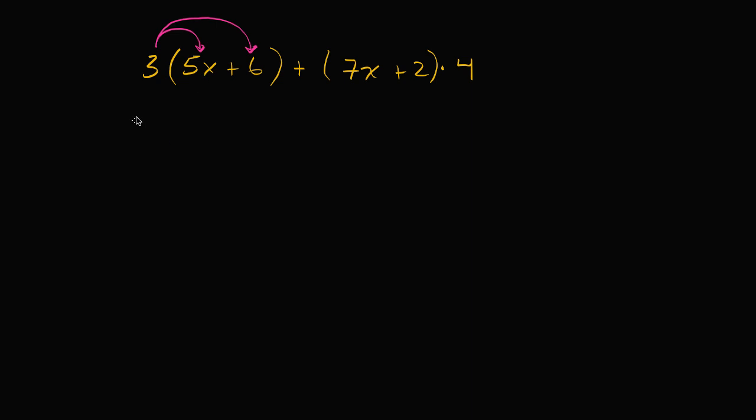So three times five x, well if I have five x's and I have three times that, I'm gonna have 15 x's. And then three times six is 18. So this part of the expression, we have now simplified to 15 x plus 18.